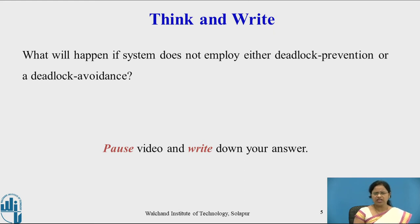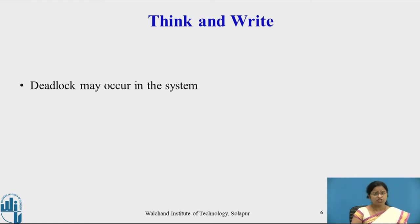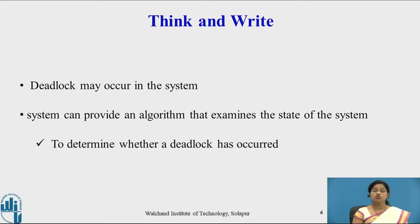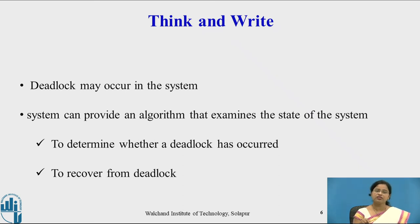What will happen if the system does not apply either deadlock prevention or deadlock avoidance? If the system does not have deadlock prevention or avoidance, the system may enter into the deadlock state. The system can provide an algorithm that examines the state of the system to determine whether deadlock has occurred. If it has occurred, there should be a recovery mechanism from the deadlock in the system.